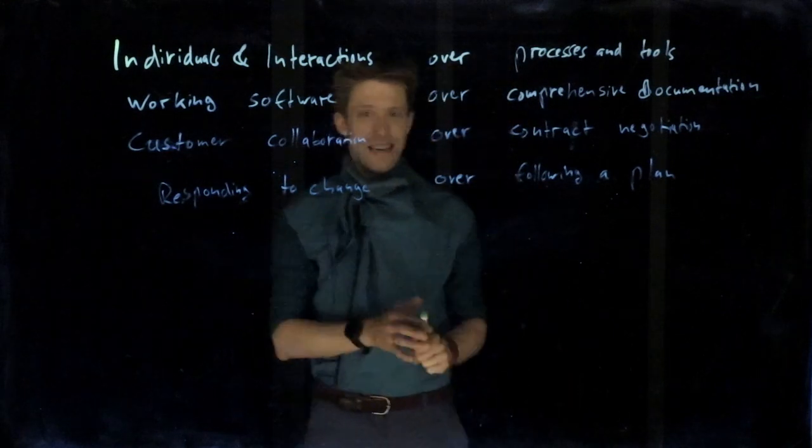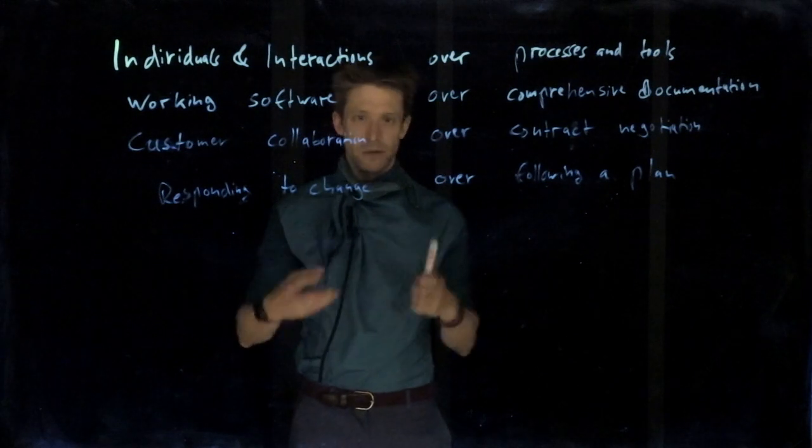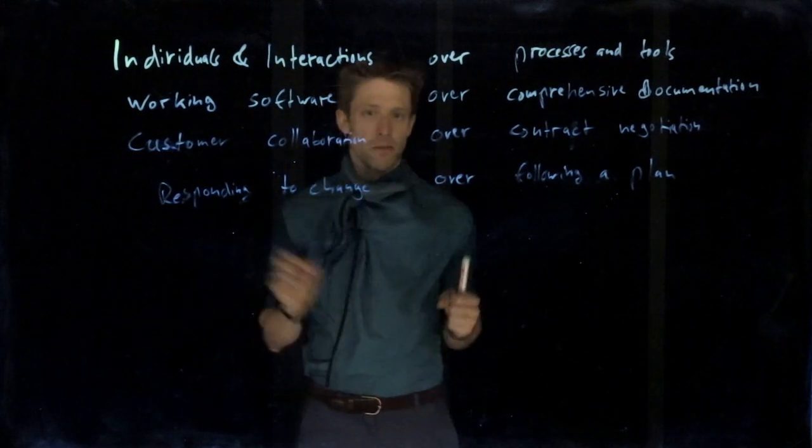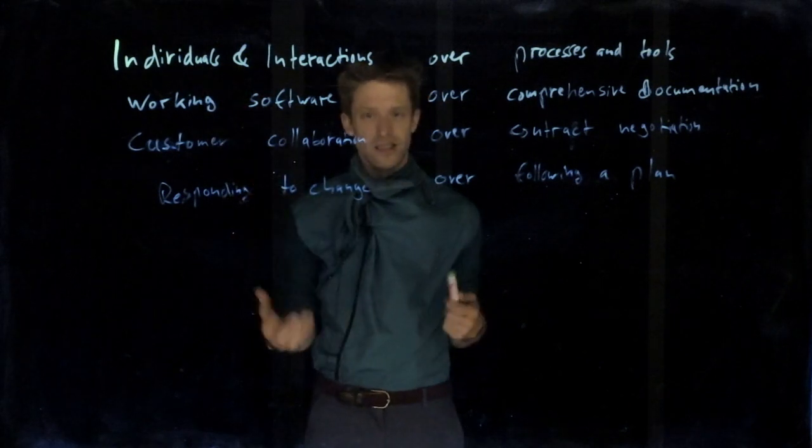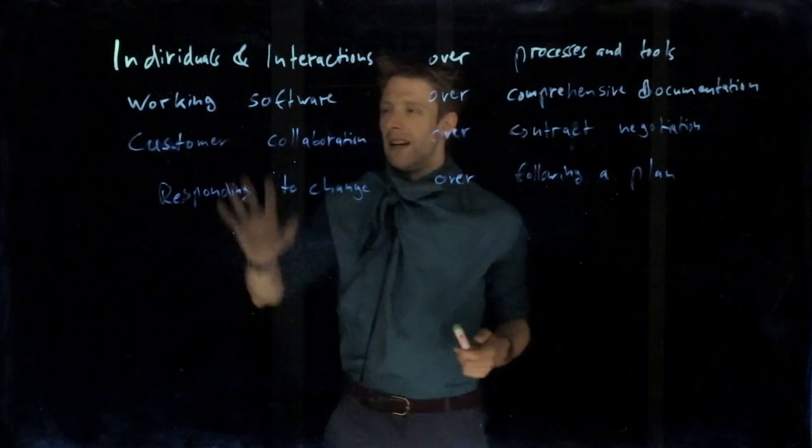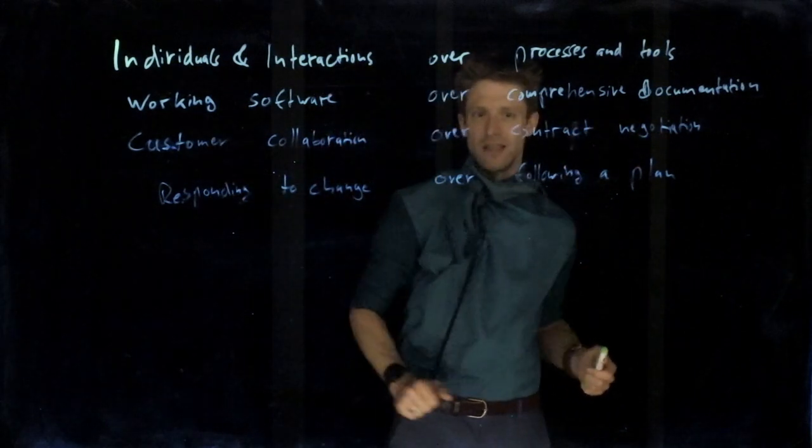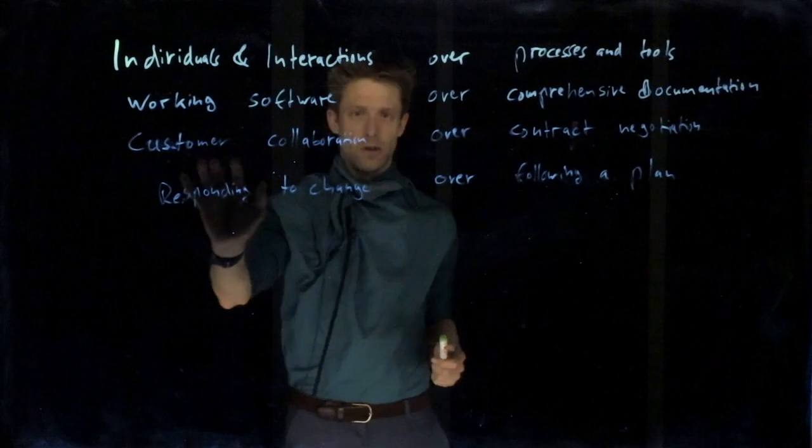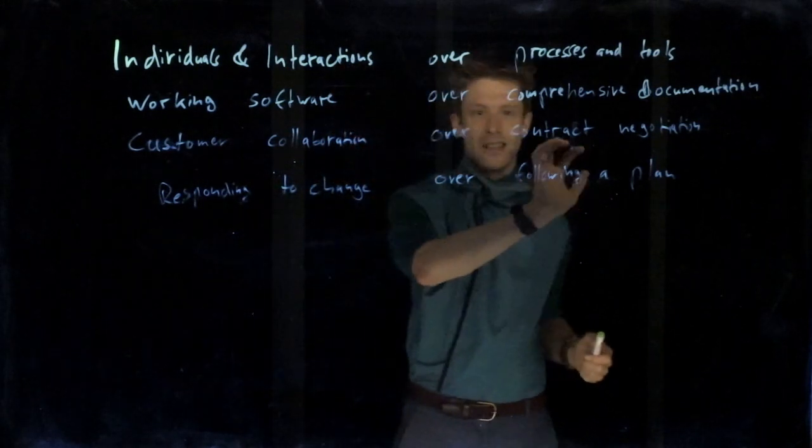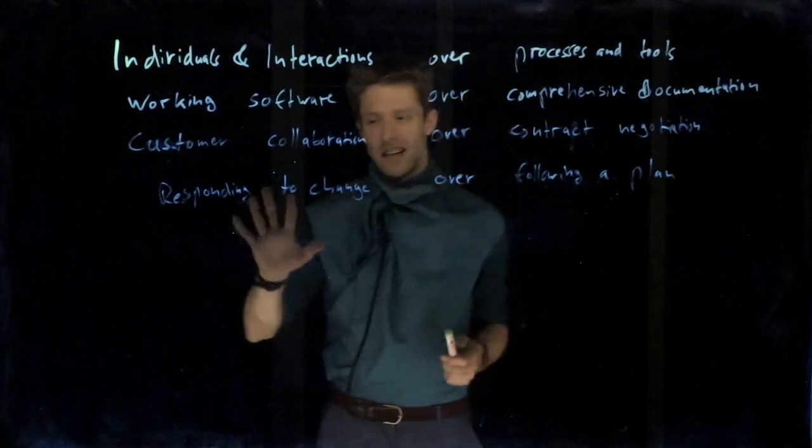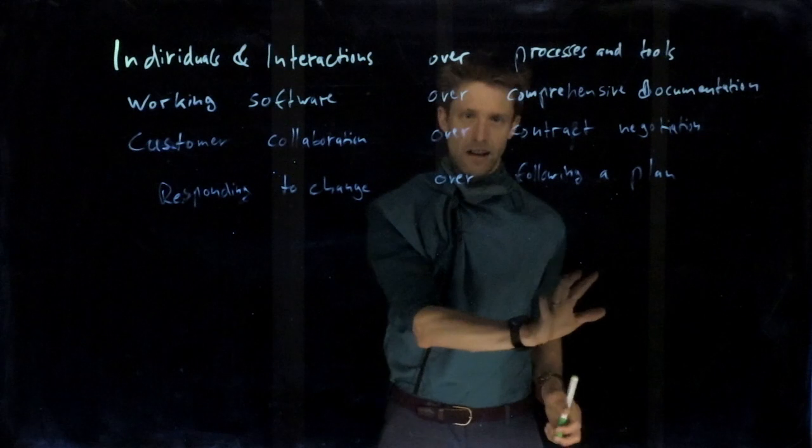Back then, it was very common to have very strict, rigid processes at companies. For example, these stages that you cannot jump over. But they said individuals and interactions discussing stuff is much more important than that. Working software is more important than having comprehensive documentation. Customer collaboration and discussions with customers are more important than negotiating contracts. And finally, being able to respond to change is more important than following a plan.